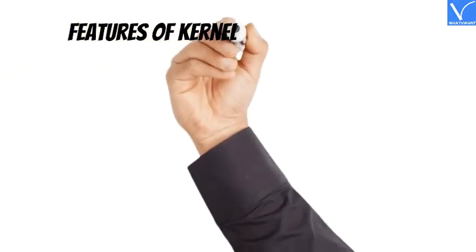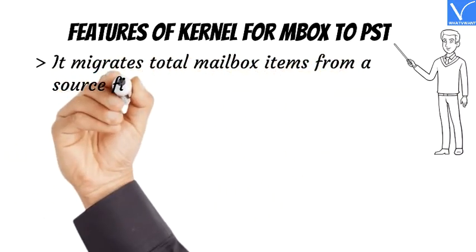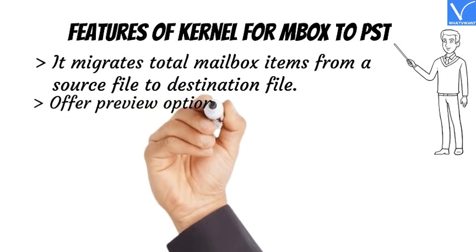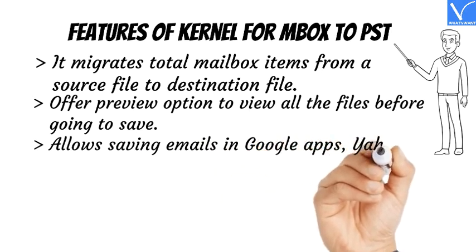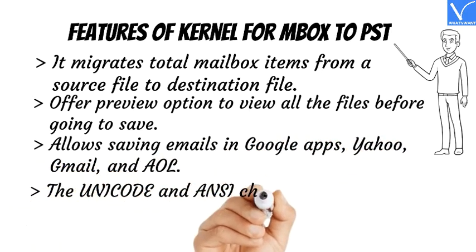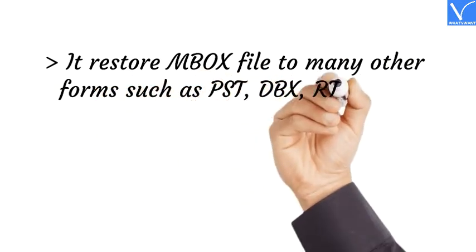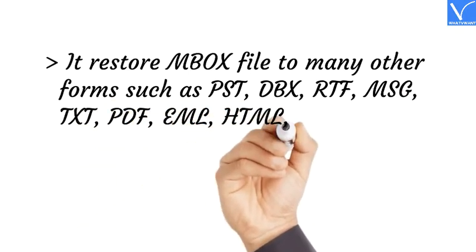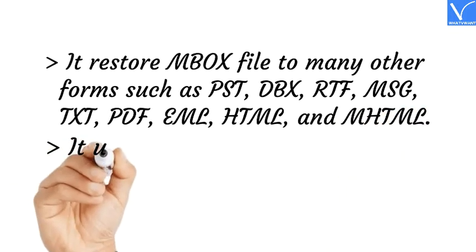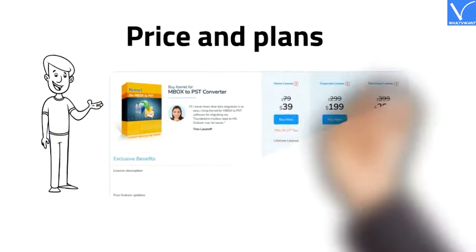Features of Kernel for MBOX to PST: It migrates total mailbox items from source to destination. Offers a preview option to view all files before saving. Allows saving emails in Google Apps, Yahoo, Gmail, and AOL. Supports Unicode and ANSI character conversion. Restores MBOX files to many other formats such as PST, DBX, RTF, MSG, TXT, PDF, EML, HTML, and MHTML. It uses advanced filters.